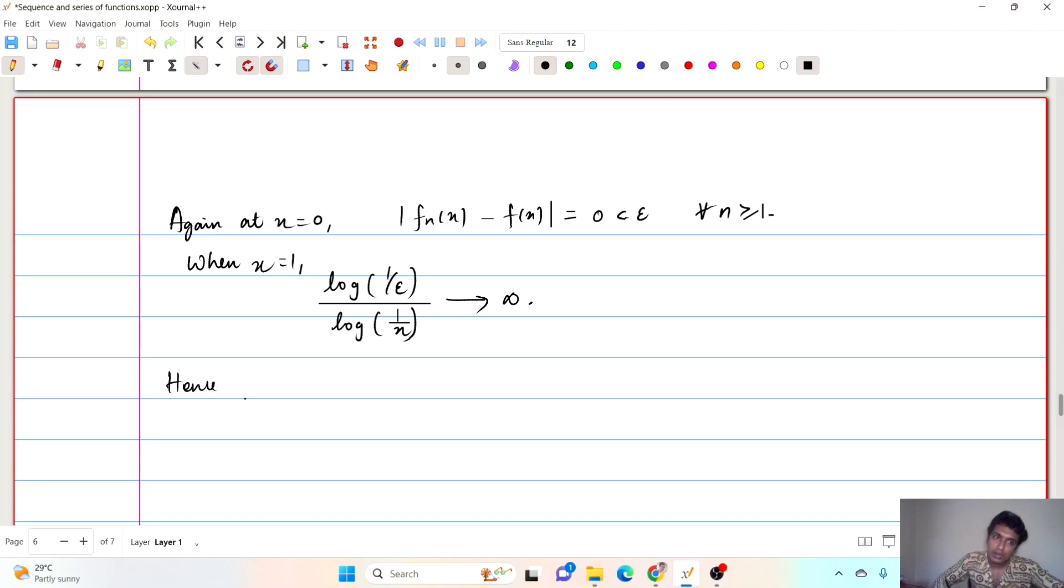Okay. And that is why we would not be able to identify an integer n such that this thing happens. Okay. Hence, we cannot identify big N in N such that absolute of fn(x) minus f(x) is less than epsilon.